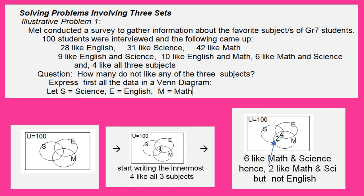After considering all three subjects, we now consider the pairs. Let's take for example Math and Science. It says here that there are 6 who like Math and Science. Take note that we already have the number 4 for all three subjects. So, all you need to place here is 2, to make a total of 6.